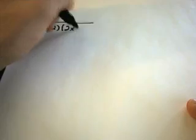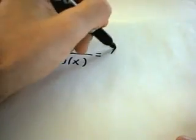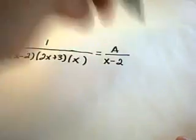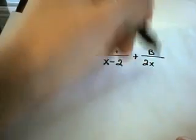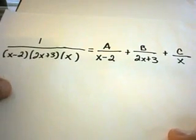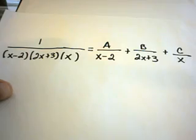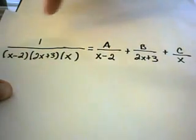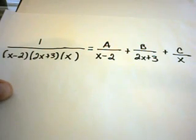Another example of distinct linear factors: suppose you have 1 over (x−2)(2x+3)(x). These are all linear factors. You break it up so each factor gets its own fraction: A over (x−2) plus B over (2x+3) plus C over x. The goal is to find values A, B, and C such that when you get common denominators and simplify, you get back to 1. We'll talk about finding those values in a separate video.